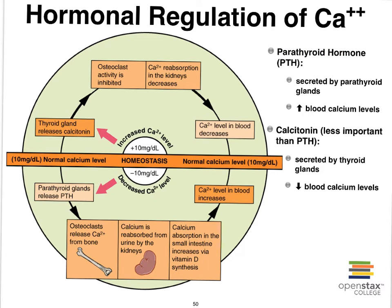Parathyroid hormone is secreted by the parathyroid glands — little glands typically found on the posterior aspect of the thyroid. The thyroid is located in your throat area with two big fleshy lobes. If you were to look at it from the back, you would usually find four little glands embedded onto the back of the thyroid gland — those are the parathyroid glands. We often find them distributed throughout the chest area as well.